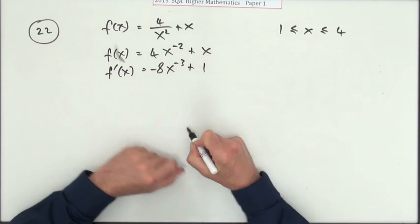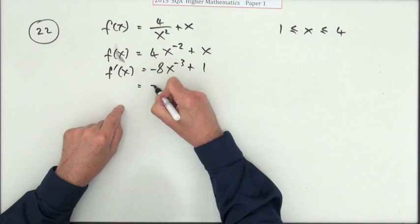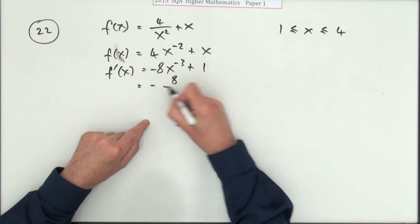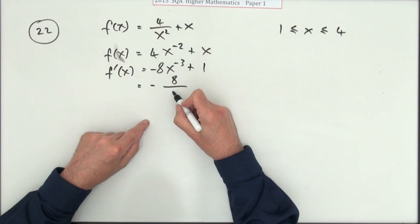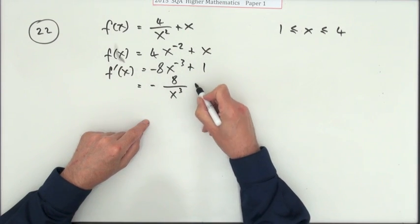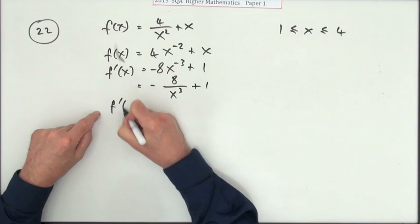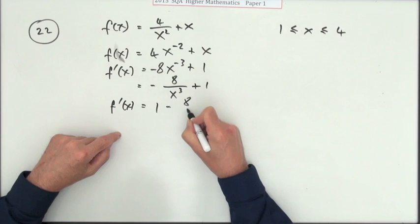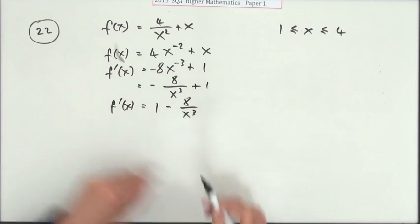Now I'll differentiate it. Multiply by the power, take one off the power, and that just goes to 1. I'll write out what that actually means. So that negative means it's underneath, so it's underneath x cubed plus 1. I'm just going to write it again, so I don't like that negative at the front: 1 minus 8 over x cubed.